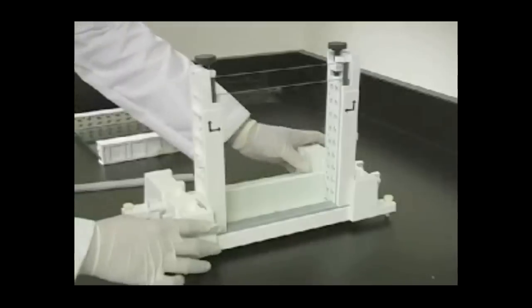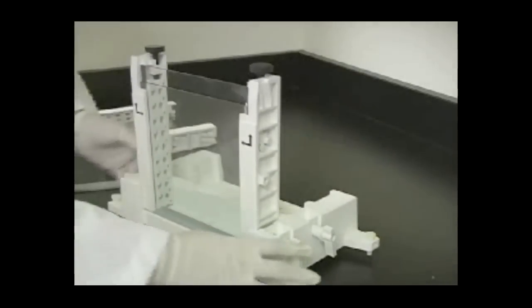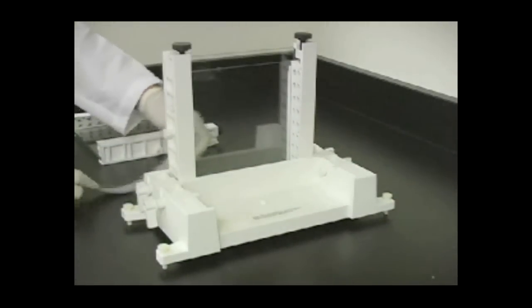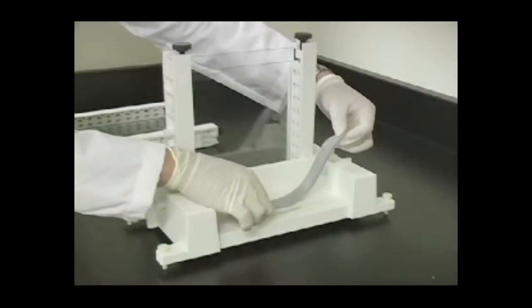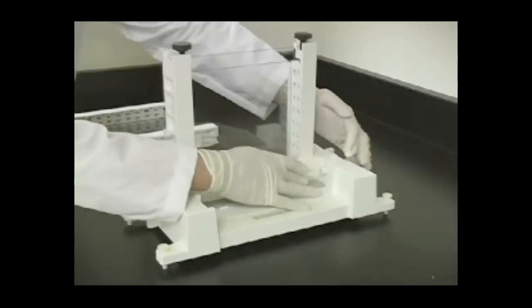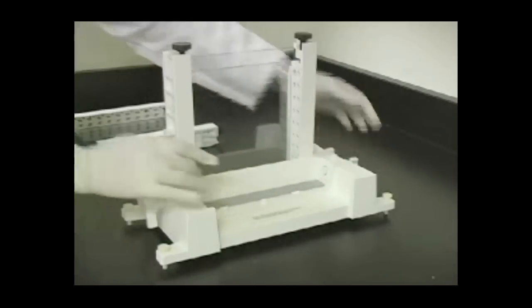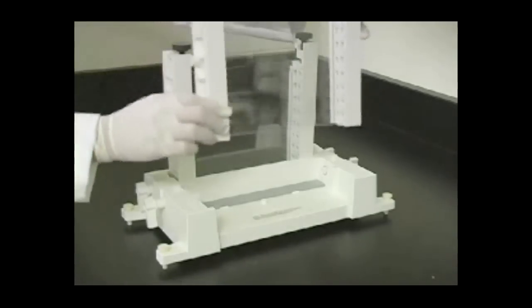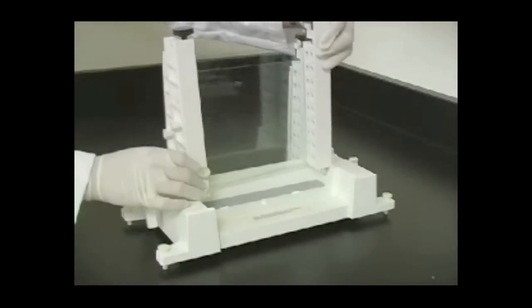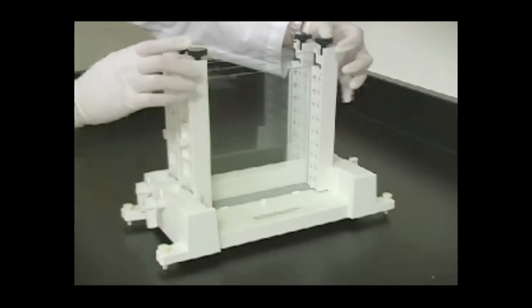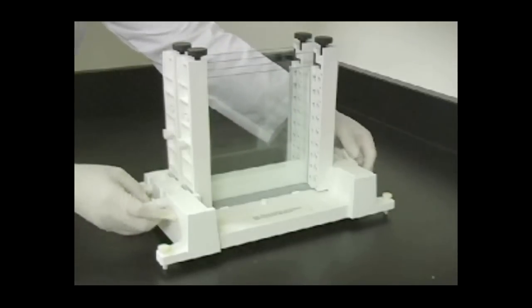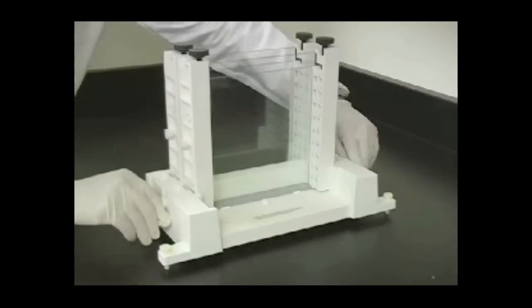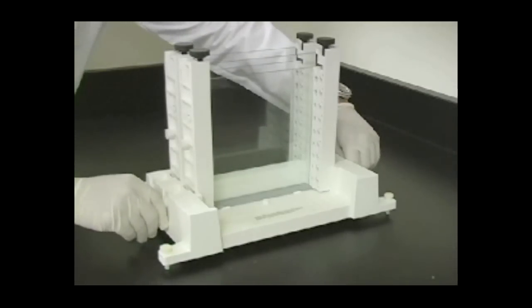Repeat the assembly of another glass plate sandwich. Place the assembled sandwich in the remaining slot in the casting stand so that the short plate is facing outward. Tighten the cams like before. The sandwiches are now ready for gel casting.